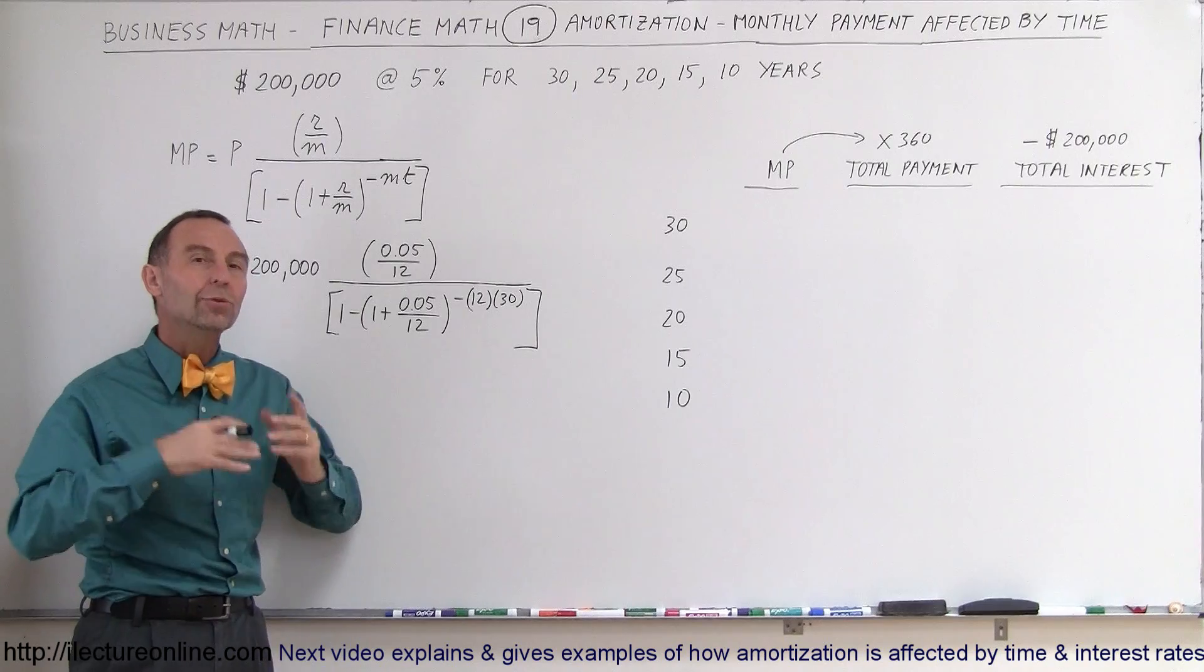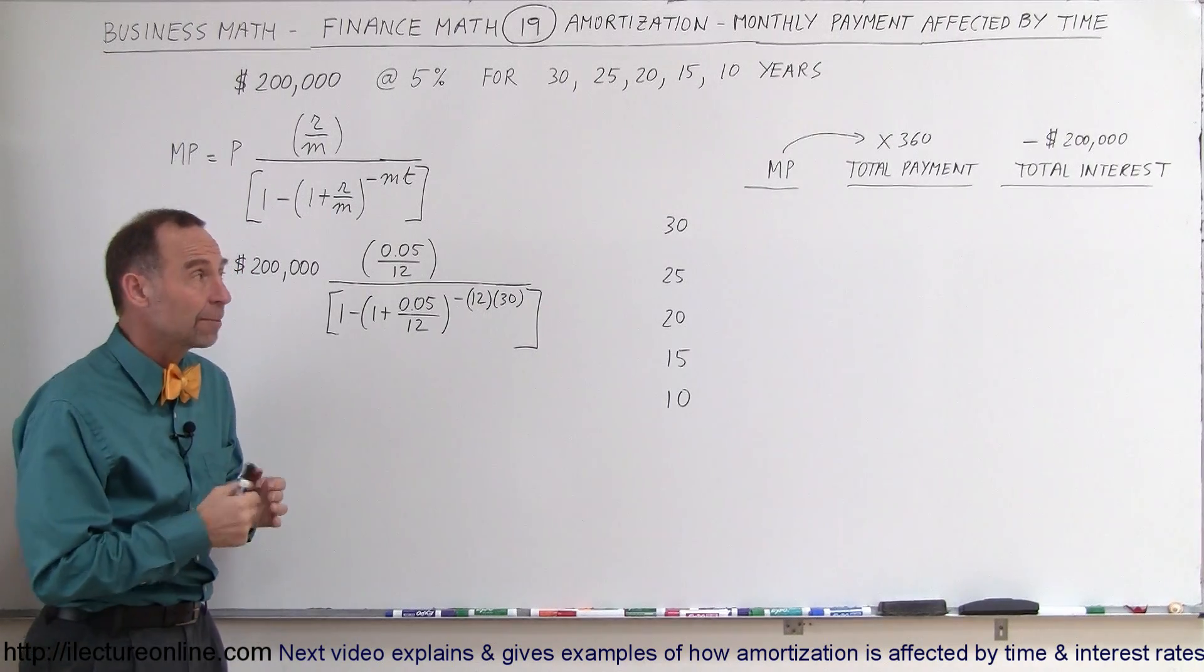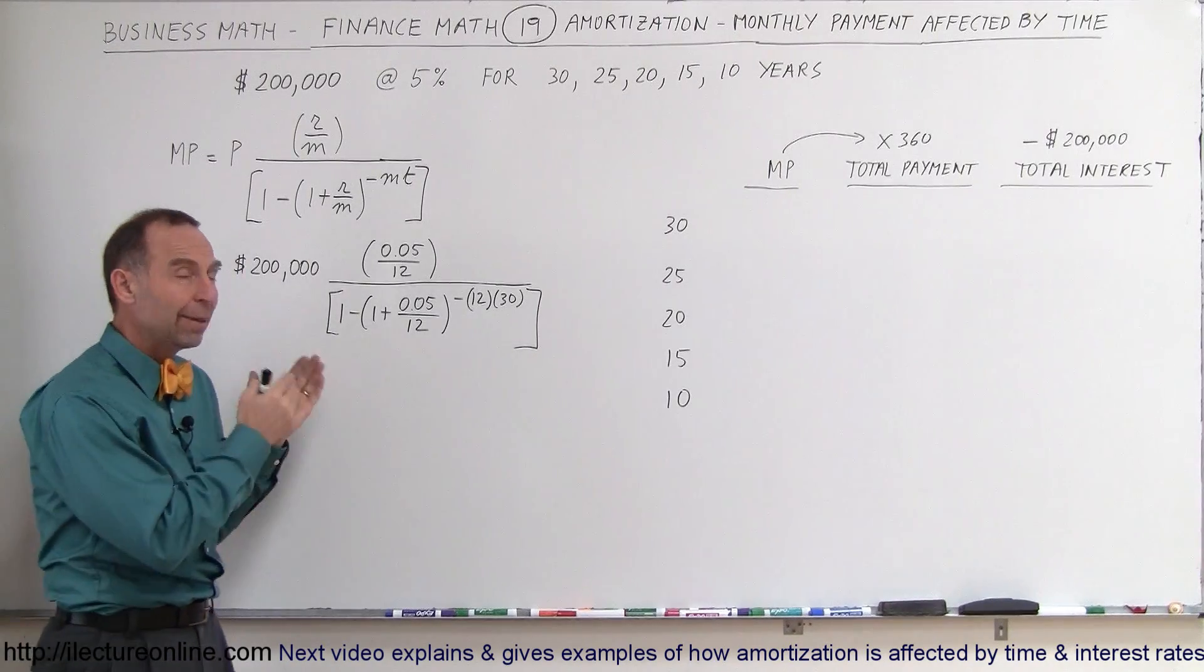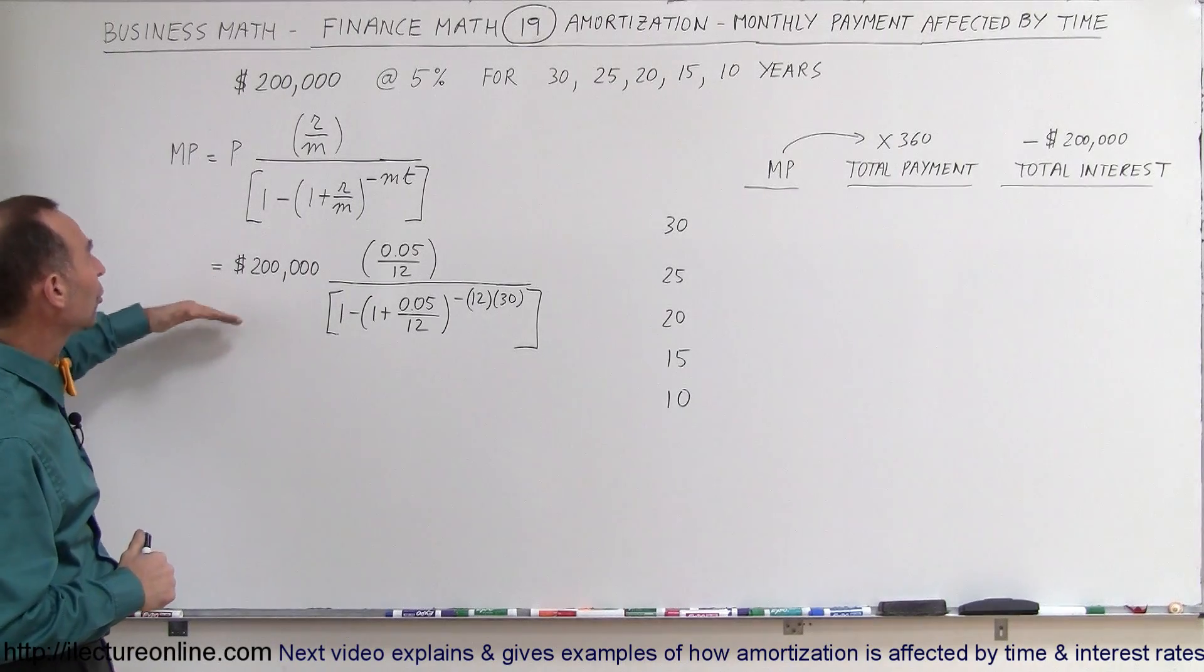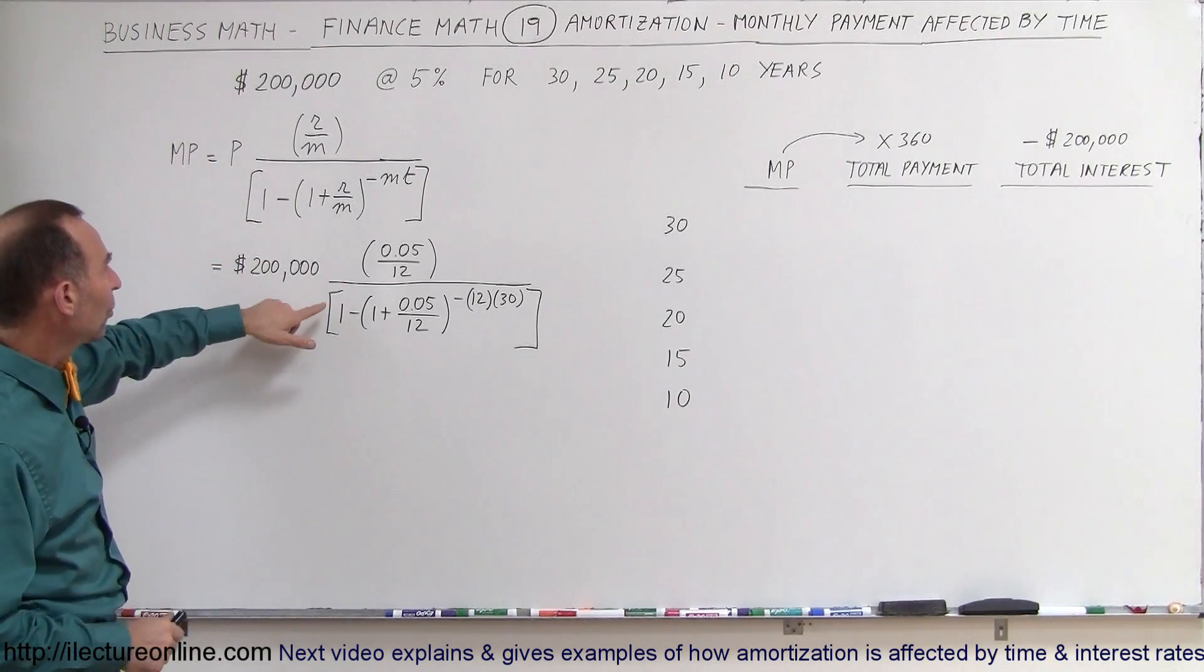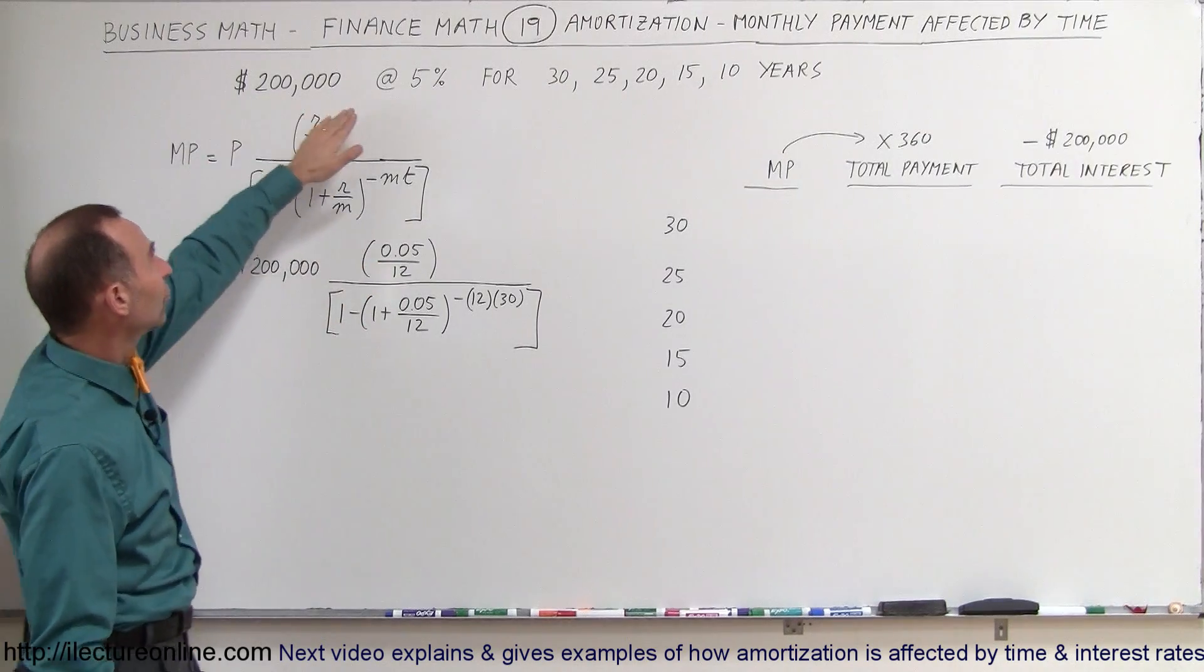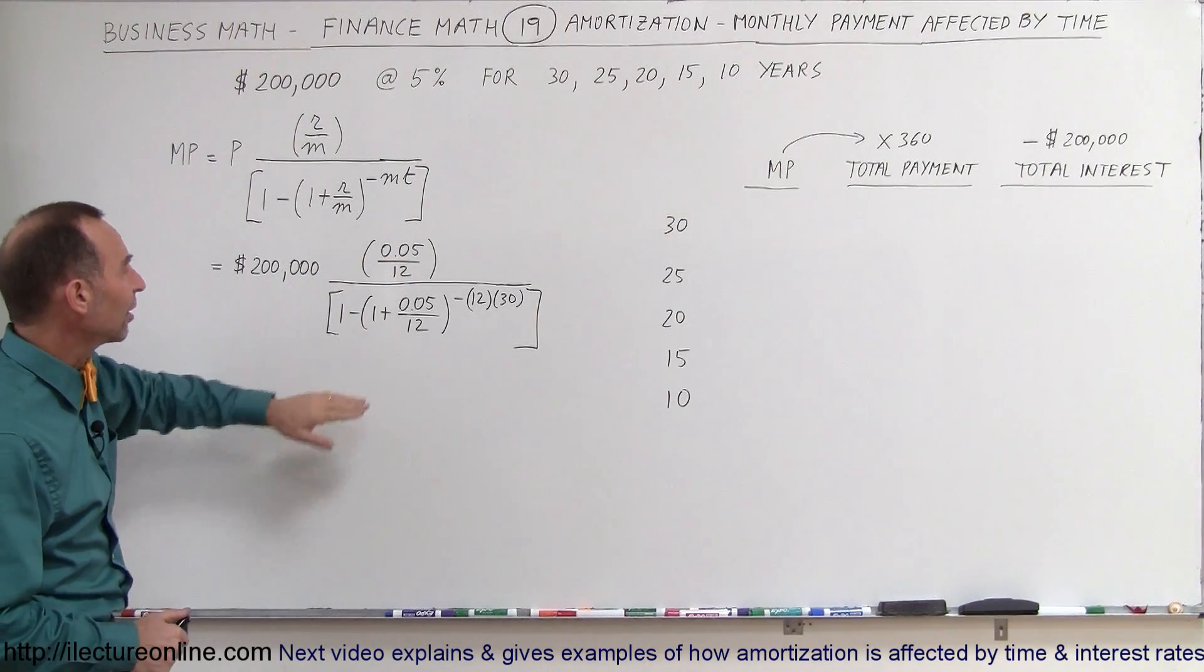So we're going to show you how the monthly payments will be affected, the total payments will be affected, and the total interest paid back to the bank will be affected by paying back the loan in various time periods. So let's start with a 30-year loan. The equation is the same, so we have, in this case, we took a loan of $200,000 and an interest rate of 5%, so we got 0.05 there.